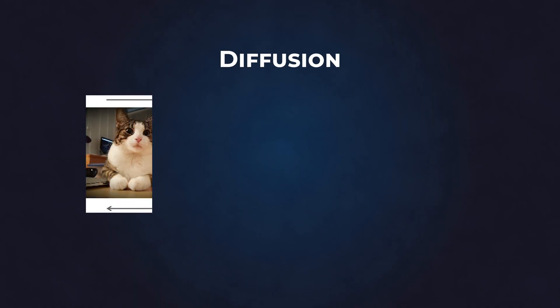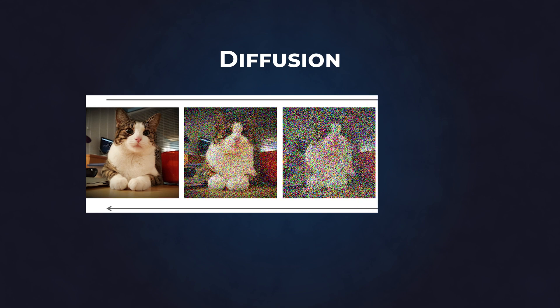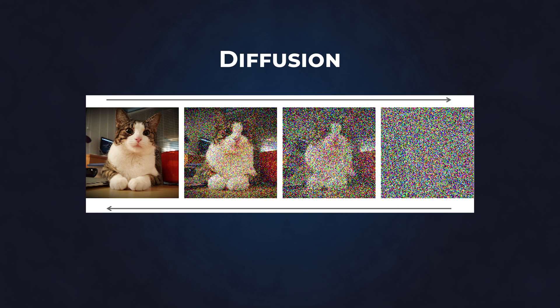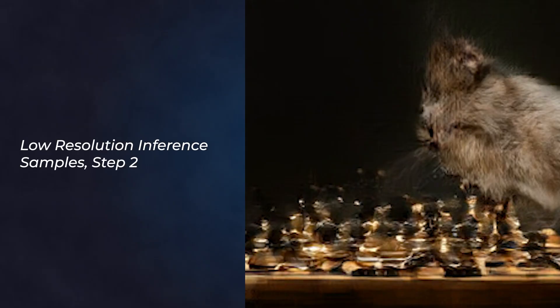Unlike Imagen, Muse doesn't use diffusion. Instead, it uses compressed discrete tokens, allowing it to be more efficient and requiring fewer sampling iterations.